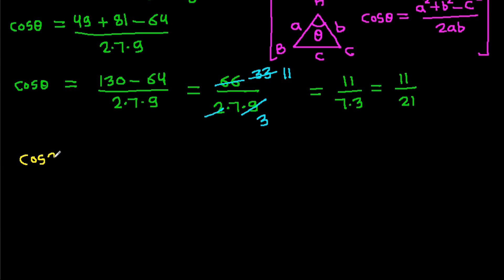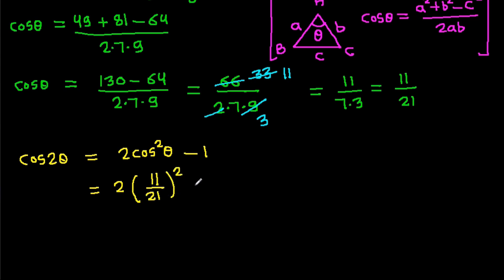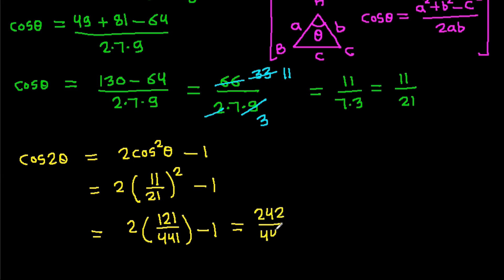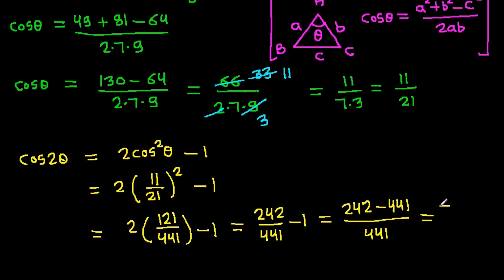Now cos 2θ equals 2cos²θ minus 1, so it equals 2 × (11/21)² minus 1, which is 2 × 121/441 minus 1, equals 242/441 minus 441/441, giving cos 2θ equals −199/441.